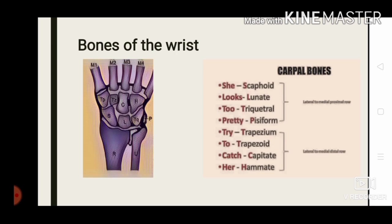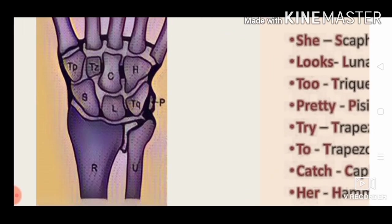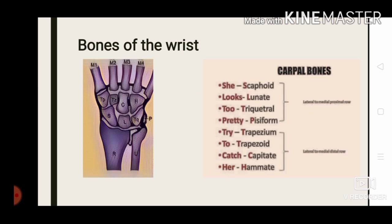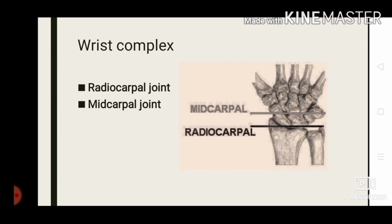Before going to wrist biomechanics, we should know the bones of the wrist. We have the radius and ulna. Between them is the radio-ulnar disc. Distal to radius and ulna is the proximal carpal row, which includes the scaphoid, lunate, triquetrum, and pisiform. Distal to the proximal carpal row is the distal carpal row, which includes the trapezium, trapezoid, capitate, and hamate. Distal to the distal carpal row are the metacarpals. To remember the names, there is a mnemonic: 'She Looks Too Pretty, Try To Catch Her.'